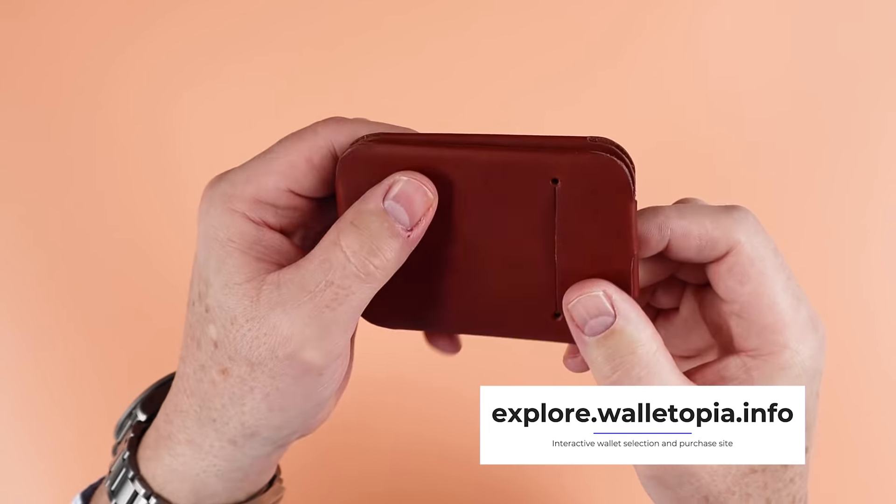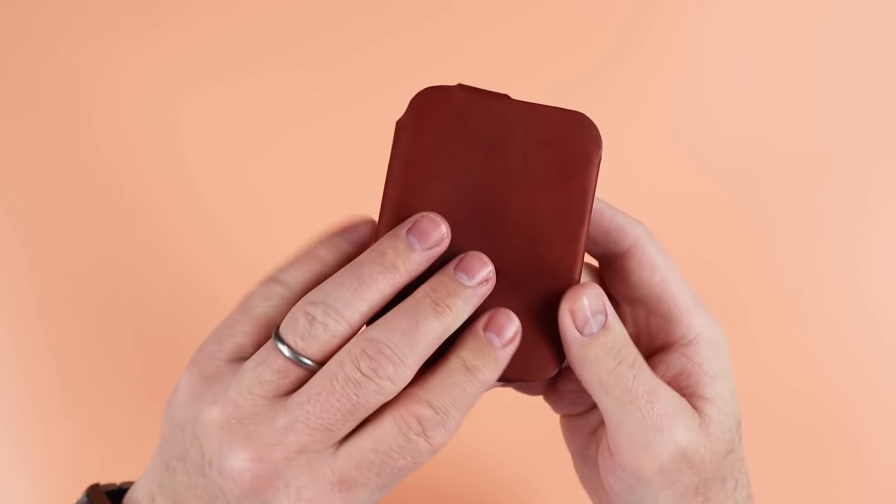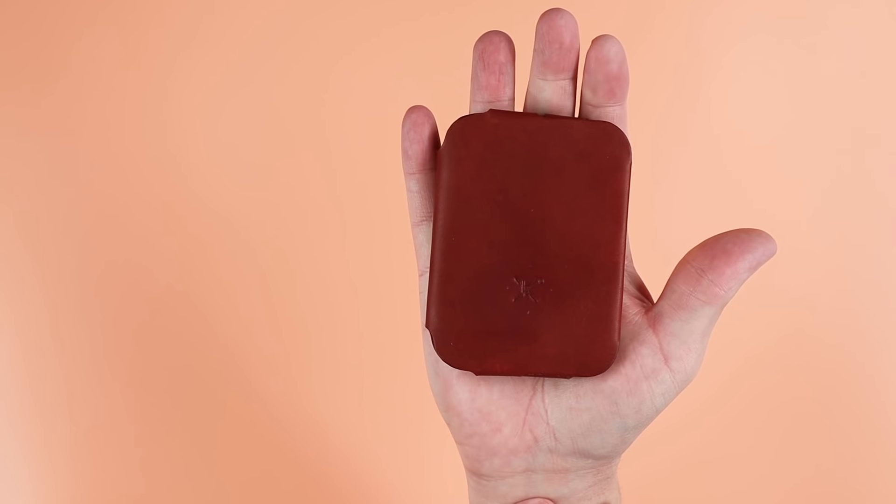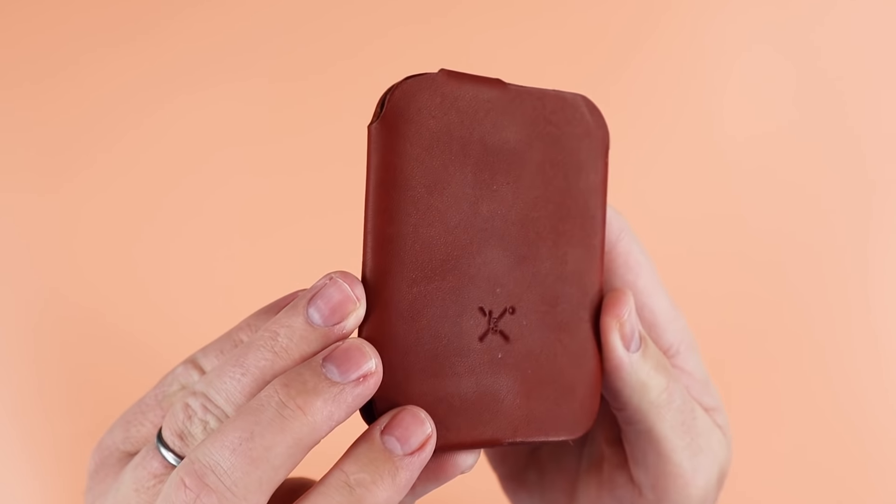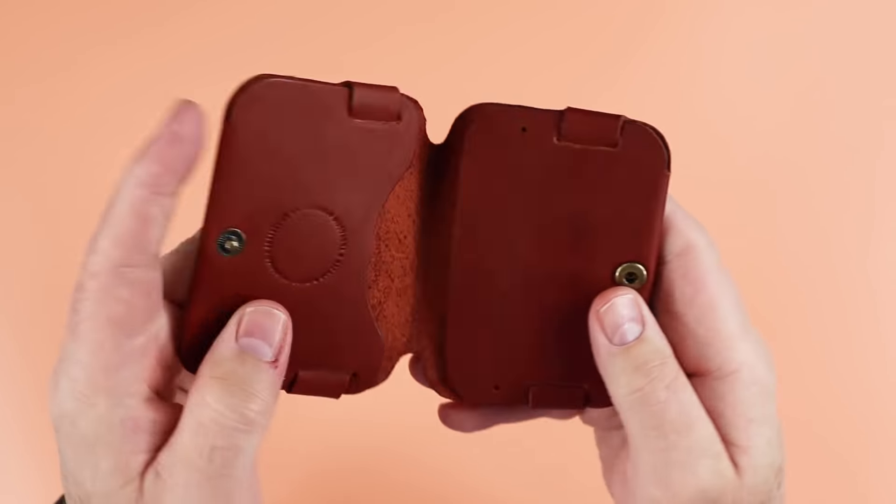Again, I love it when companies put some thought into their packaging. It really adds a lot of value to the unboxing and your impressions of the company and the product. So here it is. This is the assembly number one wallet. This is a no stitch as it has been mentioned.